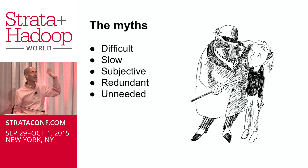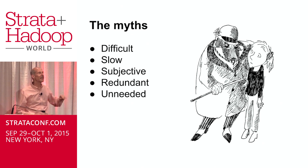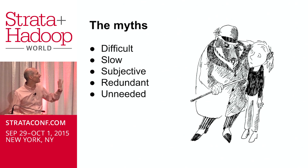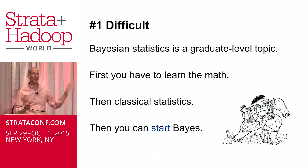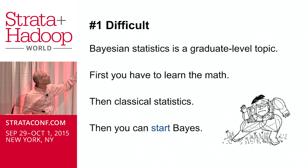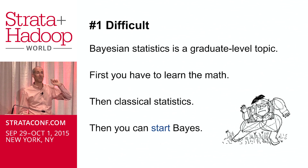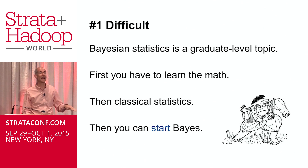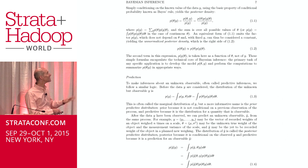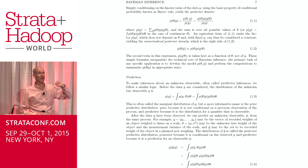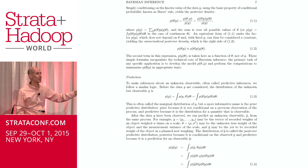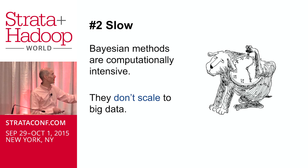Supposedly, Bayesian statistics is hard, it's slow, the results are subjective, and we don't need it anyway because it's redundant. Most places, Bayesian statistics is a graduate-level topic. You have to learn a lot of math, then conventional frequentist stats, and then maybe as a graduate student you get to start doing Bayesian statistics. If you pick up a popular Bayesian statistics textbook, this is page 7 — you only have 563 pages to go, so it is at least at first a little intimidating.